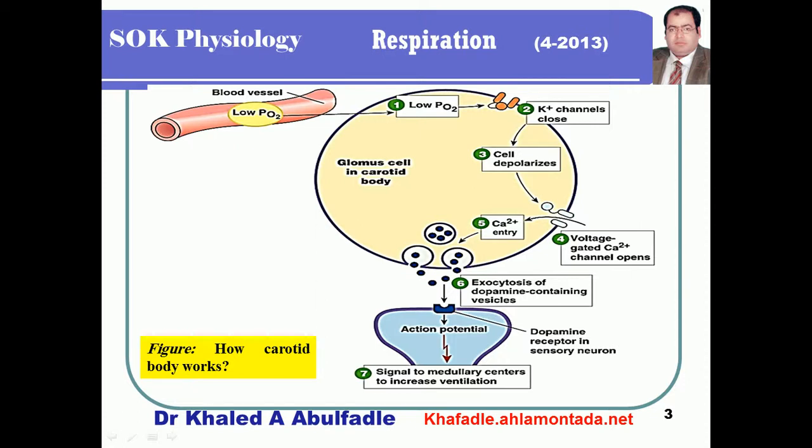What is the role of the carotid body in the regulation of respiration? The carotid body contains glomus cells. Glomus cells contain certain potassium channels which are sensitive to oxygen — called oxygen-sensitive potassium channels. When there is hypoxia, or low oxygen tension in the arterial blood, it causes closure of these oxygen-sensitive potassium channels.